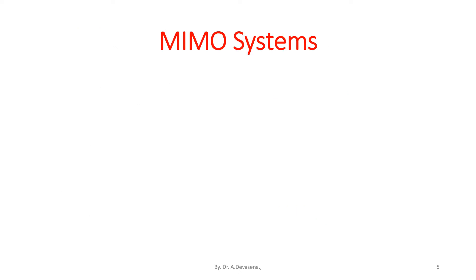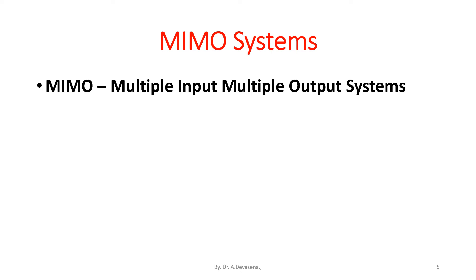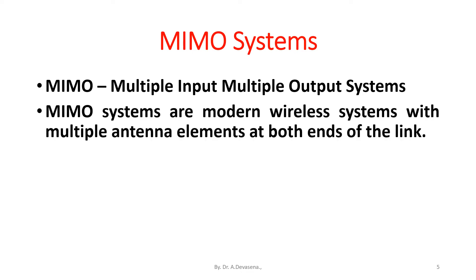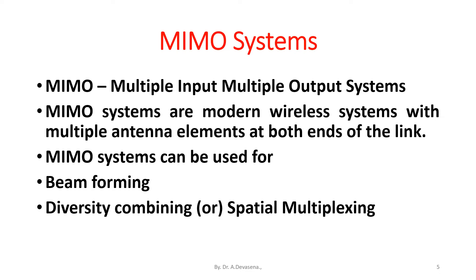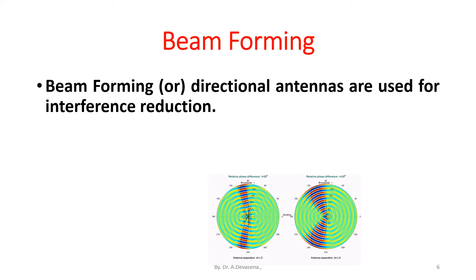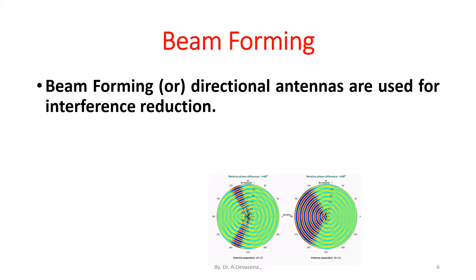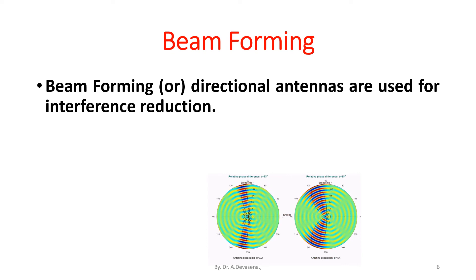MIMO systems represent multiple input multiple output systems. MIMO systems are modern wireless systems with multiple antenna elements at both ends of the link. MIMO systems can be used for beam forming, diversity combining, or spatial multiplexing. Beam forming or directional antennas are used for interference reduction.